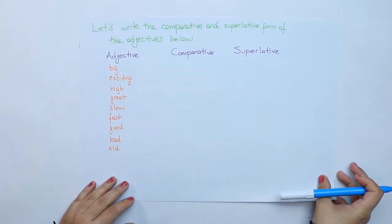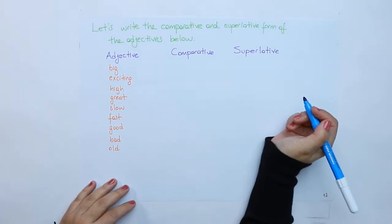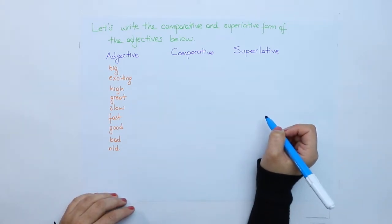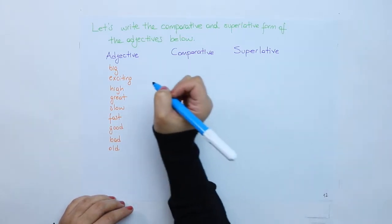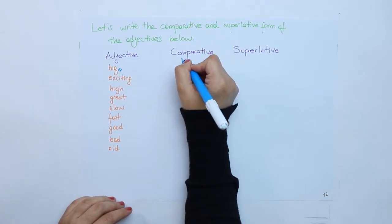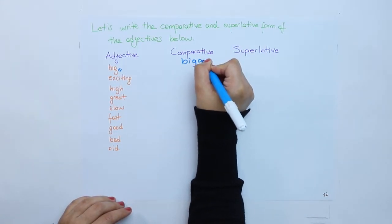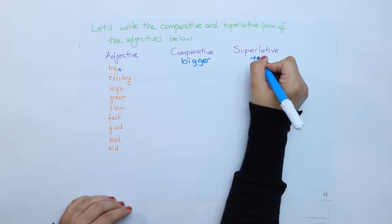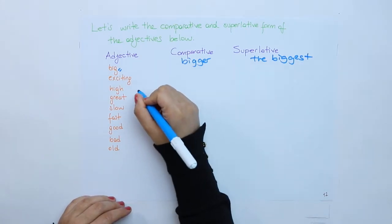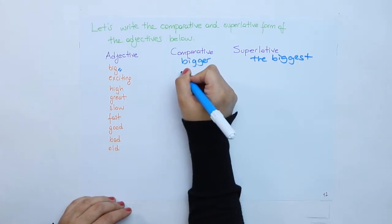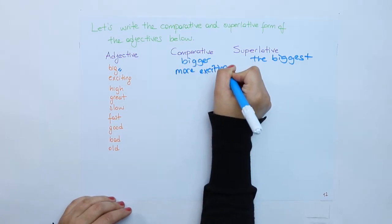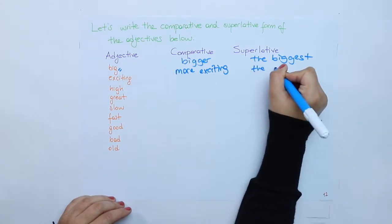Let's try the comparative and superlative forms of the adjectives below. This is an exercise for you actually. So let's do them together. Big, remember the rule consonant vowel consonant, bigger, the biggest. Exciting, more exciting, the most exciting.